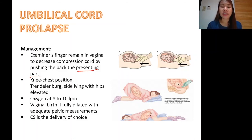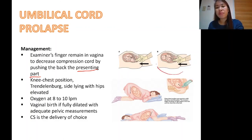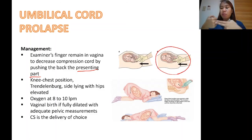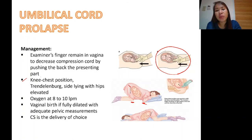If the buttocks are the presenting part, push the buttocks upward so it does not compress the umbilical cord. Another management strategy is the knee-chest position. As we can see, the patient is on her knees with her chest down. When this portion is elevated, gravity will pull the baby to the other side, thereby decreasing compression on the umbilical cord.